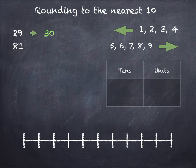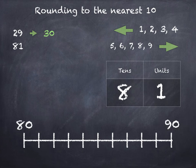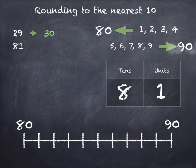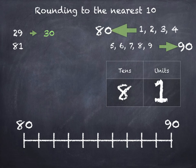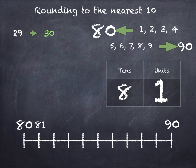What about 81? 8 tens and 1 unit. 81 lies between 80 and 90 on the number line, so we can round down to 80 or up to 90. The units digit is 1 and that tells us that we round down to 80. And if we look at 81 on the number line we can see it's a lot closer to 80.